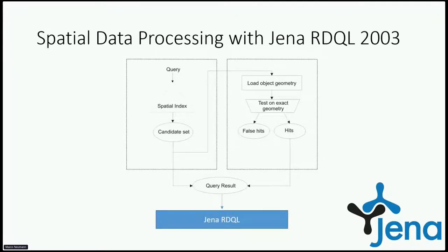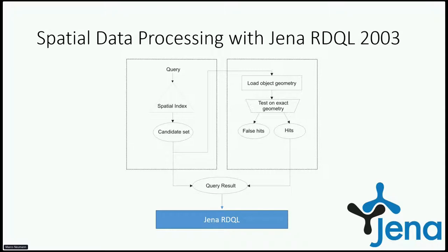The RDF spatial process I had implemented at the time had a spatial-first design and was coded with Java, covered with a relational spatial blade with simple feature support in SQL, where a web client would query a spatial index to retrieve a candidate set as URIs, and if required, would load more geometries for further evaluation from the database. Ultimately, the query results would be passed to the general RDQL query processor for RDF query pattern matching.